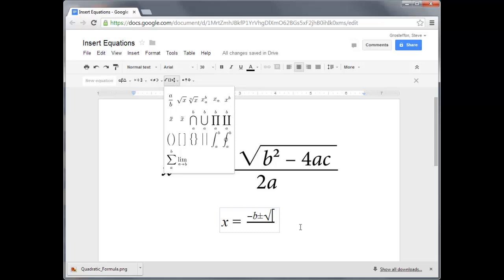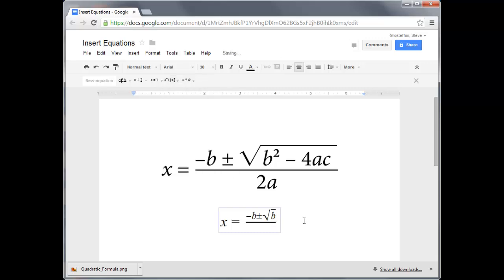Or more simply, you can just type b and then shift 6 and the number 2. So you have b squared. Now in order to exit the exponent, press enter.